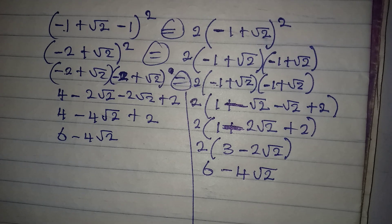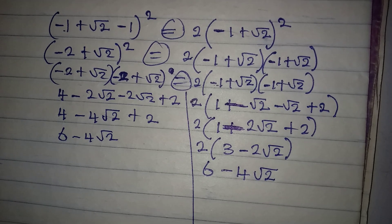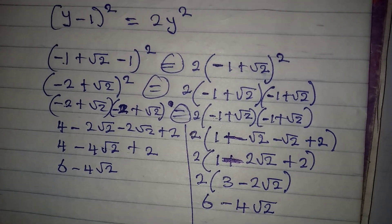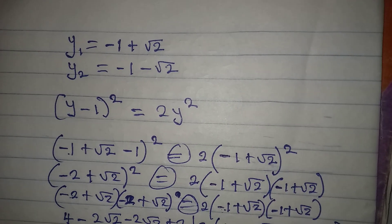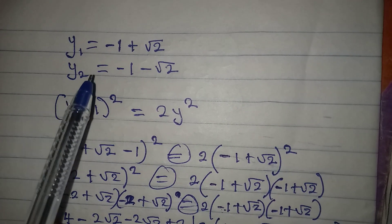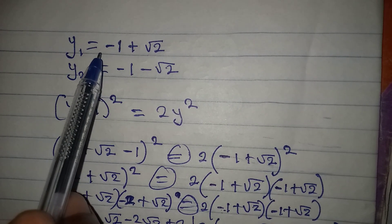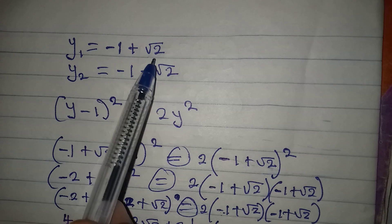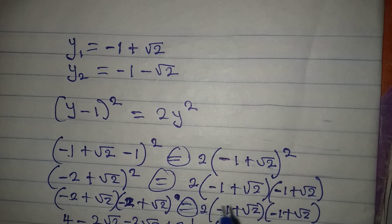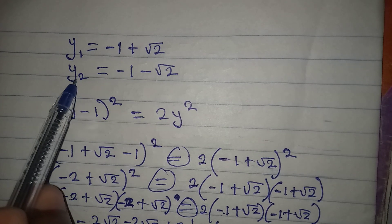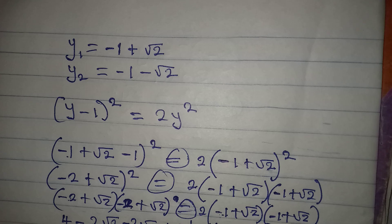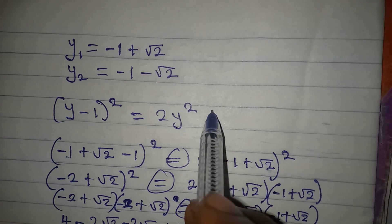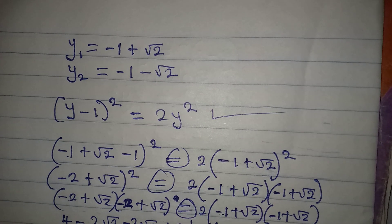Both sides give 6 - 4√2, so the first solution satisfies the given equation: y₁ = -1 + √2. You can try out the second solution yourself and see if it also satisfies the equation. Thank you for watching.